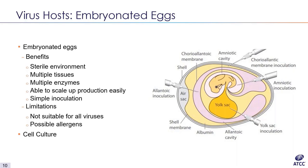At ATCC, we focus on propagating viruses in either cell culture or embryonated eggs. Other hosts exist, such as mouse models, but our focus is on producing virus for both research and clinical diagnostic communities, which means we need the capacity to produce large quantities of virus quickly. Eggs are a useful viral host because the interior of an egg is a sterile environment with a variety of tissues and enzymes available, and the inoculation process is simple — you inject the virus and that's it.